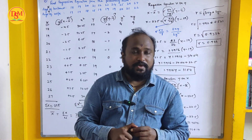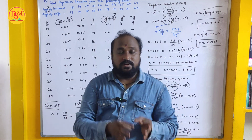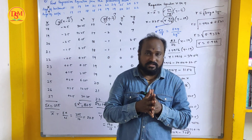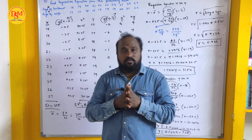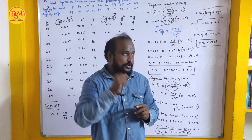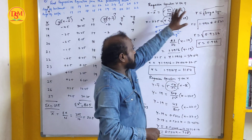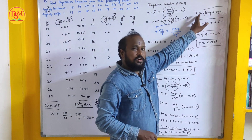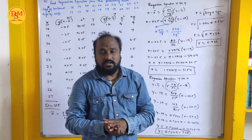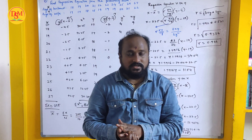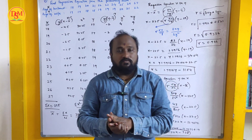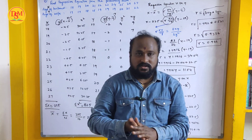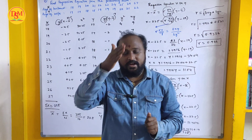Practice the remaining sums — related sums will 100% appear in the exam. This type of sum is for 12 marks, and the coefficient of correlation question is for 4 marks short question. So we have covered 16 marks. Keep watching the videos. See you in the next video — your Shaker signing off, bye!